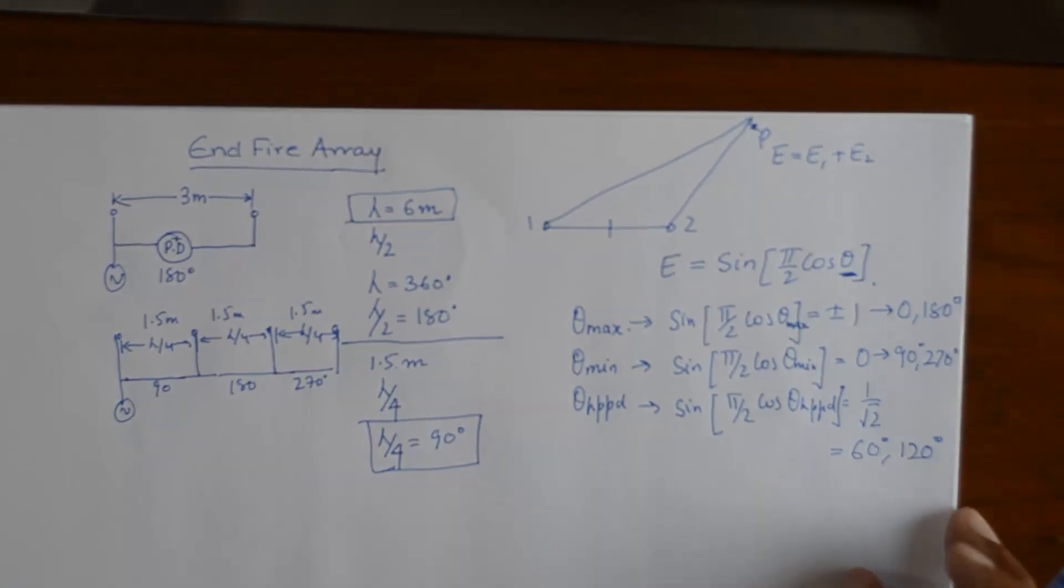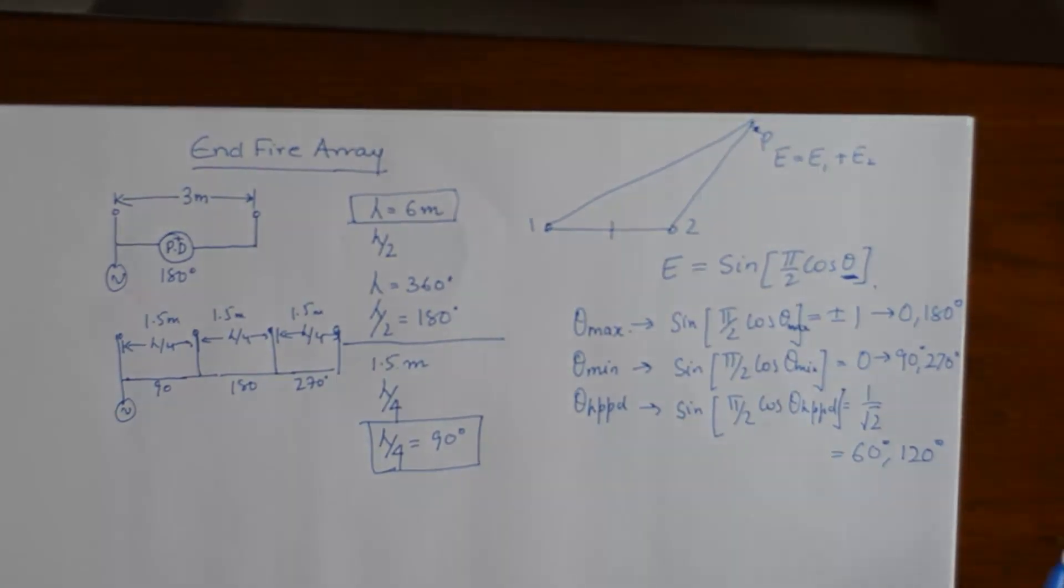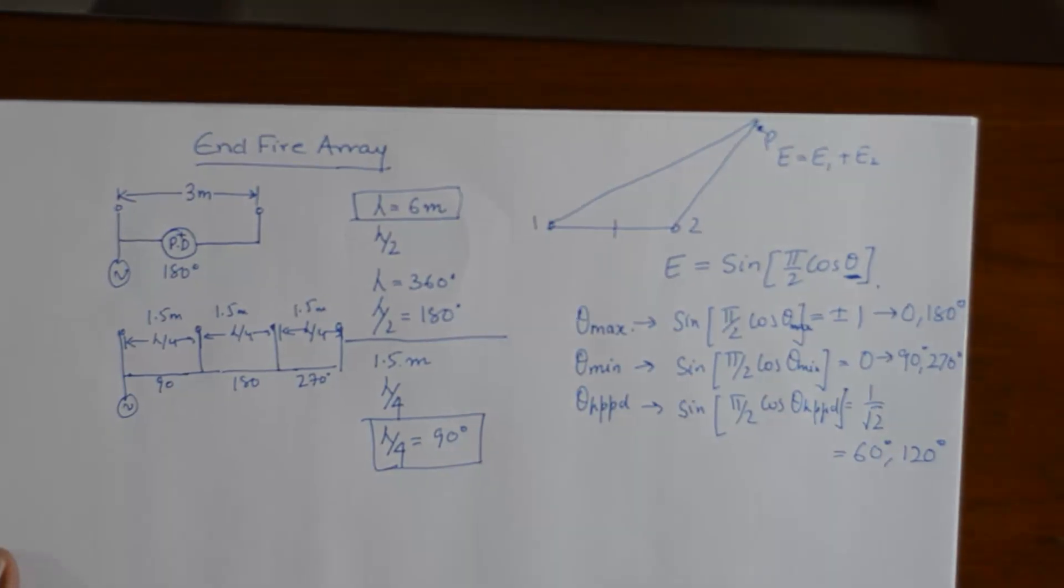Now if you have watched my previous video for broadside array, you can see the values of theta max and theta min have reversed. So now you have an idea as to how you can plot the radiation pattern.